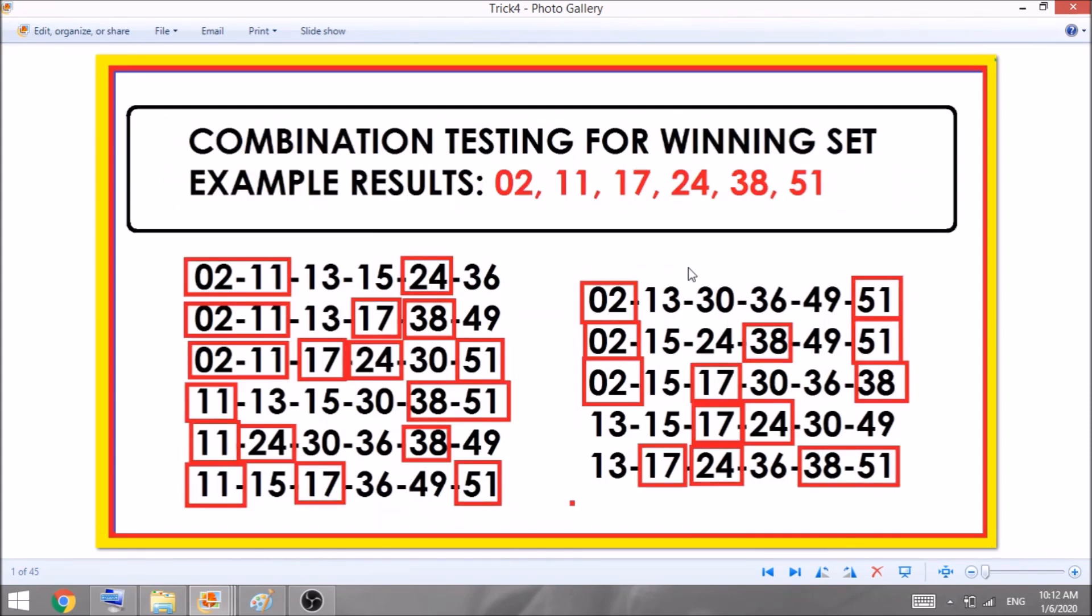So, the combination testing for winning set. Example results are 02, 11, 17, 24, 38, and 51. Now as you can see, this is my example results. So now on the first line, as you can see, we had hit three numbers and this is a consolation prize.